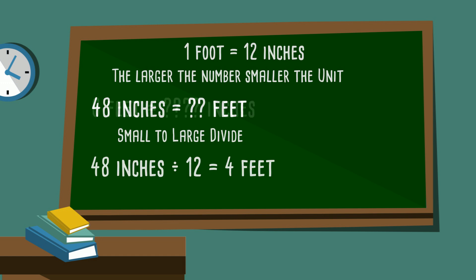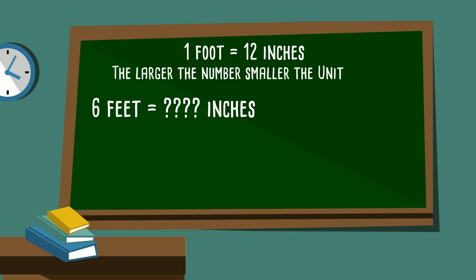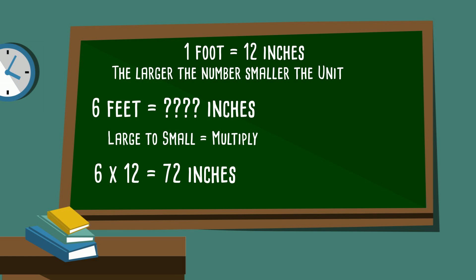Now how about this? 6 feet equals how many inches? Here's your hint: 1 foot equals 12 inches. We're going from large to small, so we're going to multiply. 6 times 12 equals 72 inches.